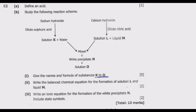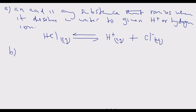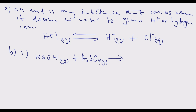We identify K by writing the reaction equation. When sodium hydroxide (NaOH aq) reacts with sulfuric acid (H₂SO₄ aq), we get a salt — sodium sulfate (Na₂SO₄ aq) — plus water (H₂O liquid). The hydrogen released from the acid combines with the hydroxide to form water.